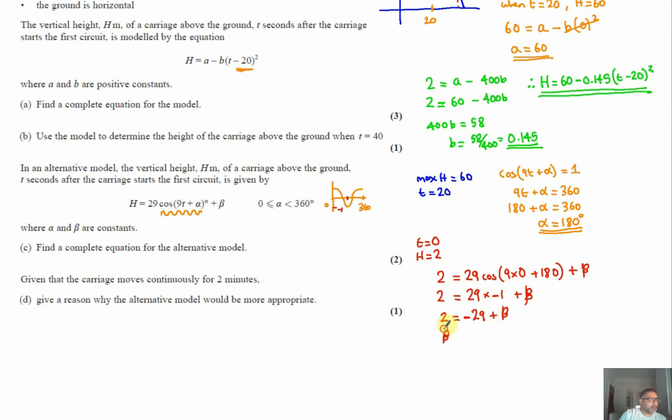If 2 equals minus 29 plus beta, then beta must be equal to 31. That leads us to our fully formed equation as the question has asked: h equals 29 cos(9t + 180) plus 31, replacing alpha and replacing beta with 31. That gives us our final model.